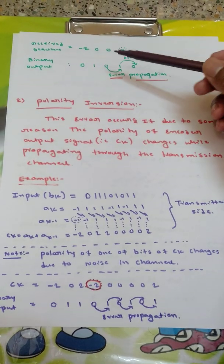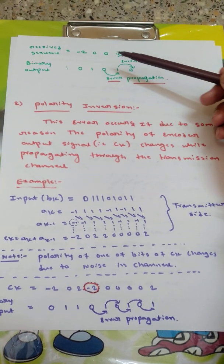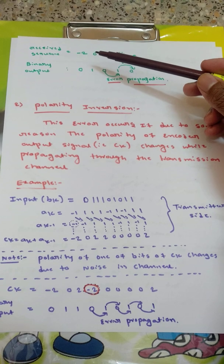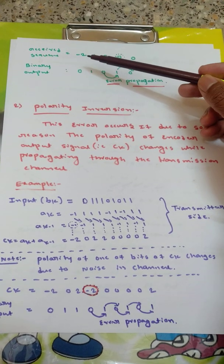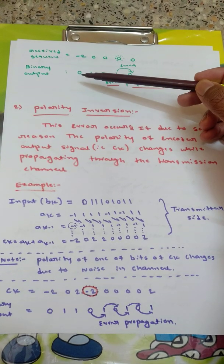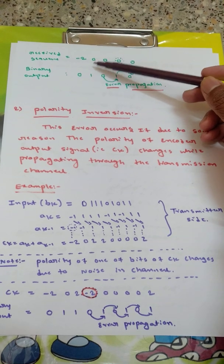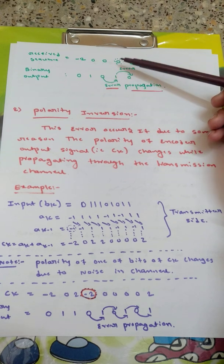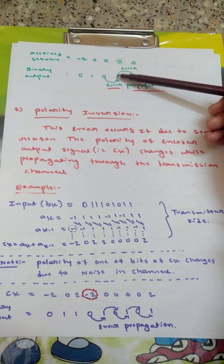Now received sequence is this one: minus 2, 0, 0, 0. Binary output what we will be writing according to the decoding algorithm. If received sequence CK is minus 2 then output will be 0. If 0 then complement of previous 1, so complement of 1 is 0. If 0, complement of 0 is 1. 0, complement of 1 is 0.